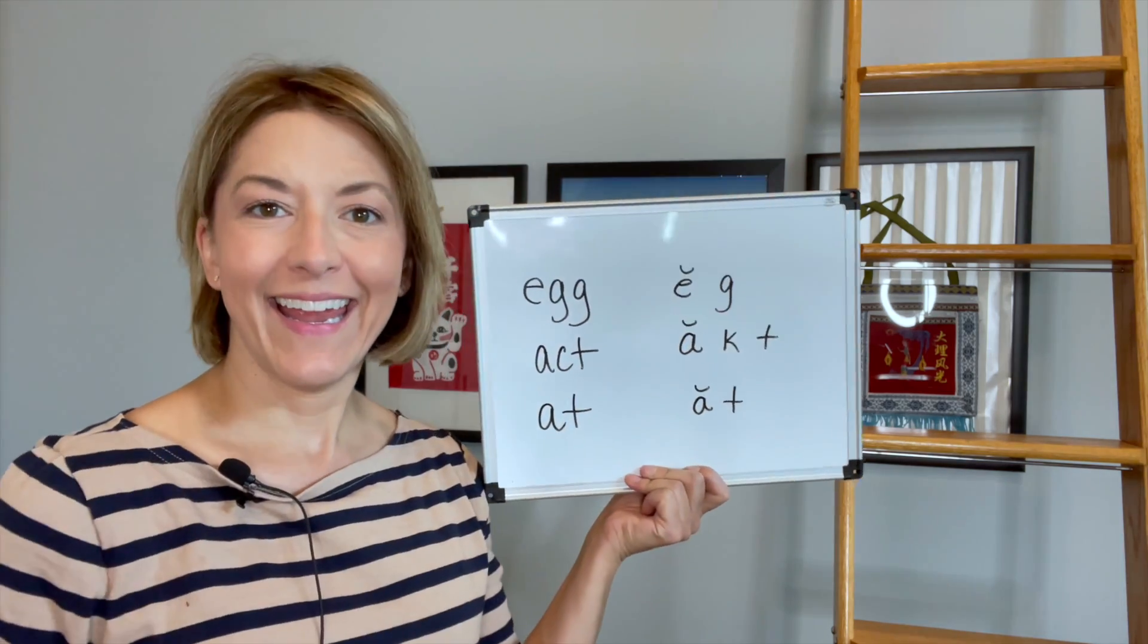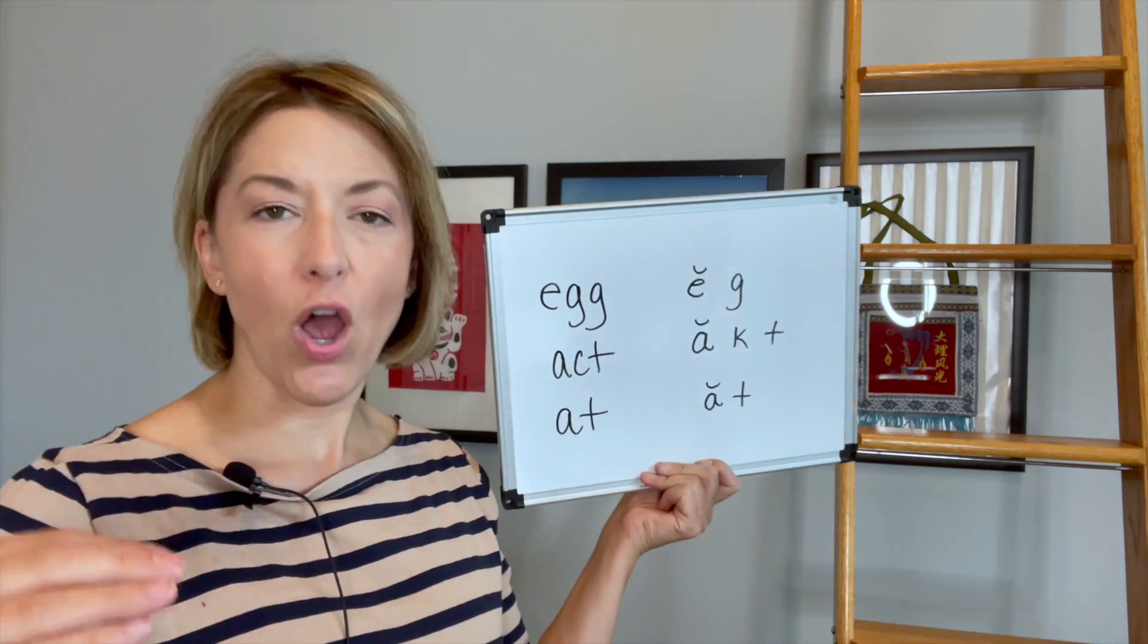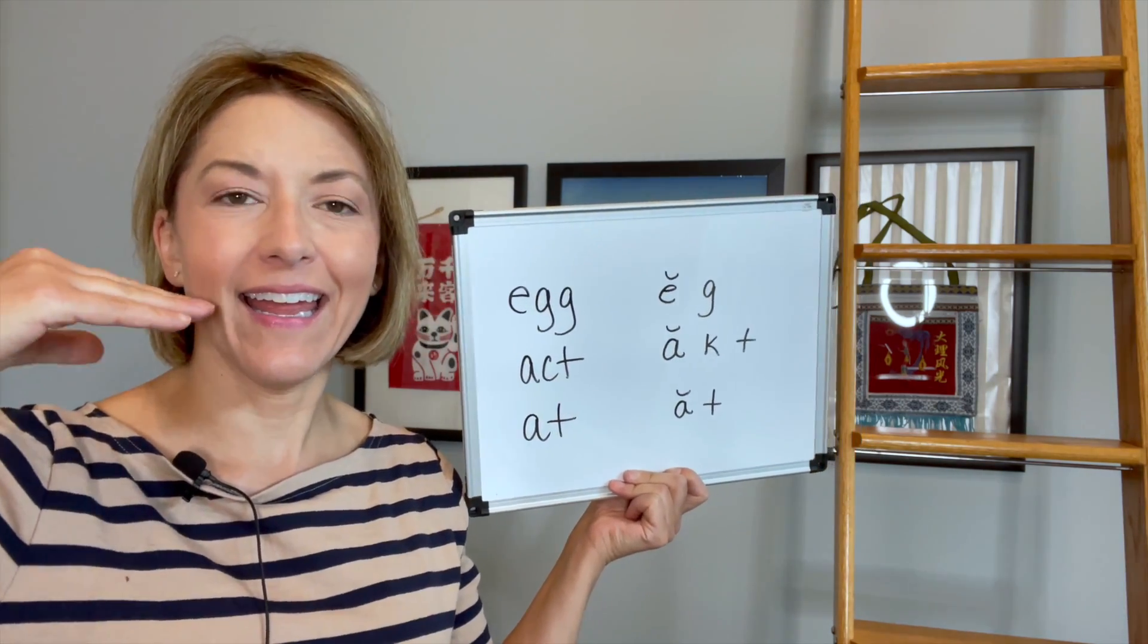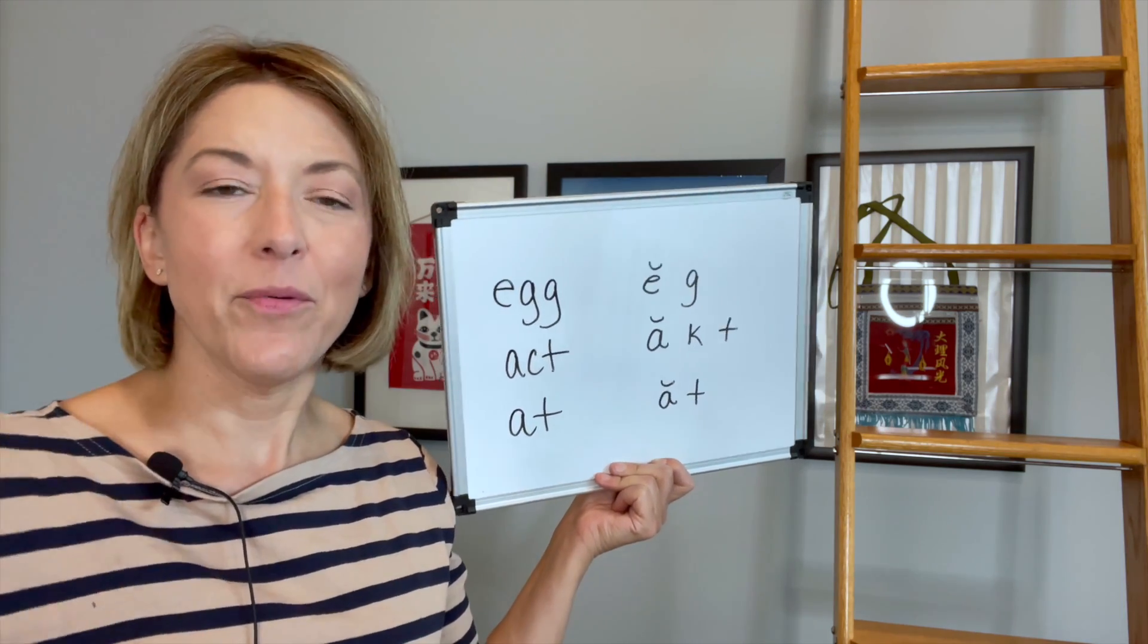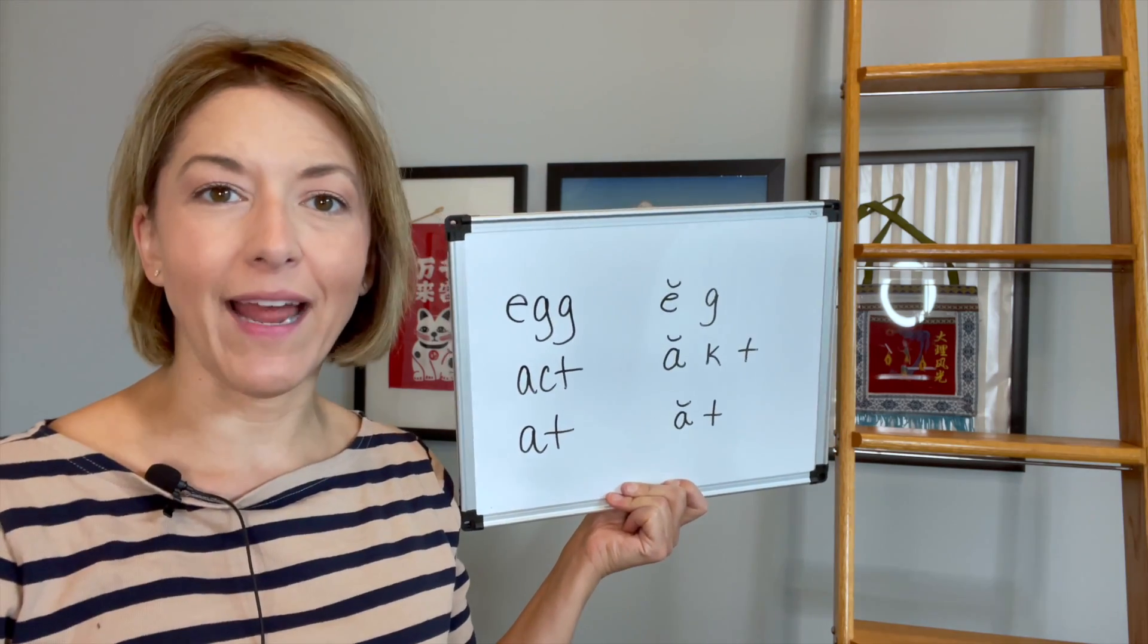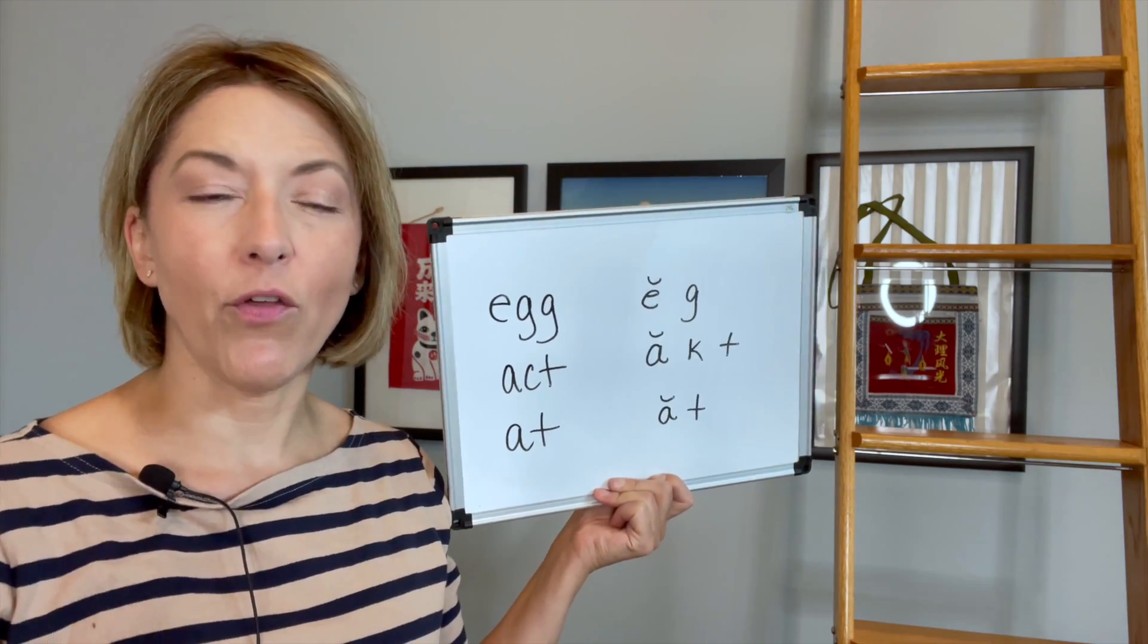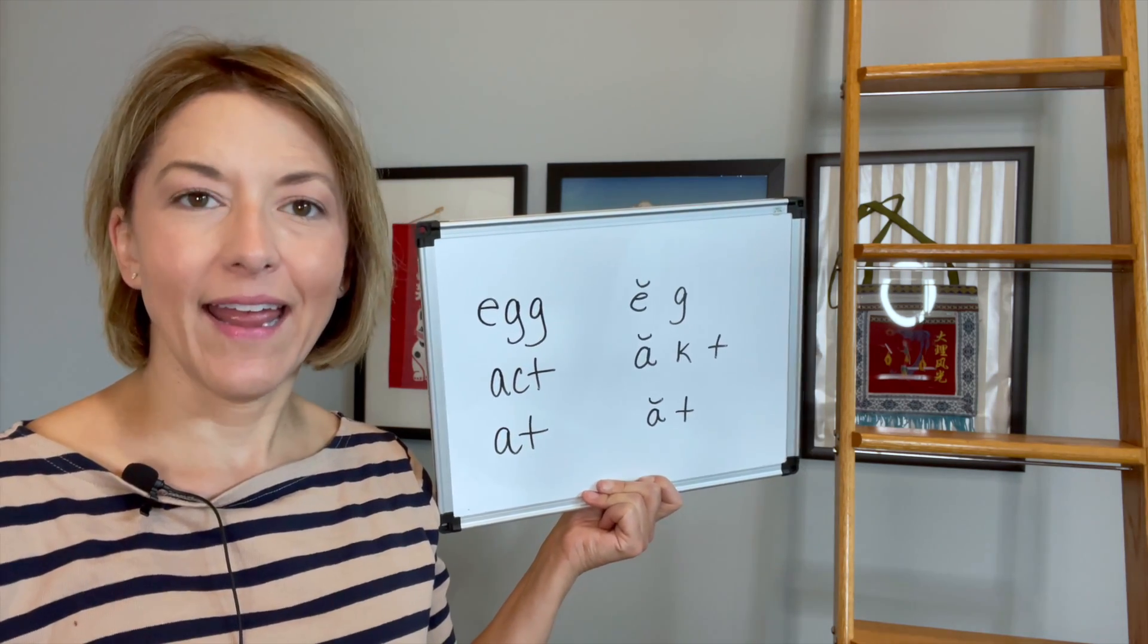So for the short e sound, you can see my mouth is open: e, e, e. And you can see the tip of my tongue between my top and bottom teeth. It is not a short i with my mouth more closed. It is a little more open: e, e, e.